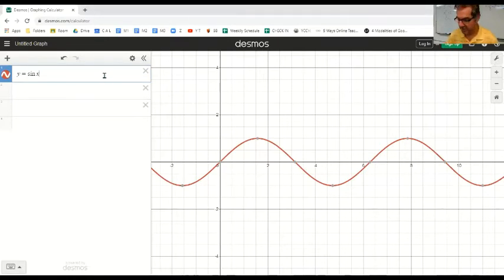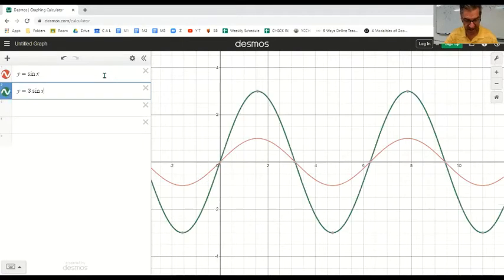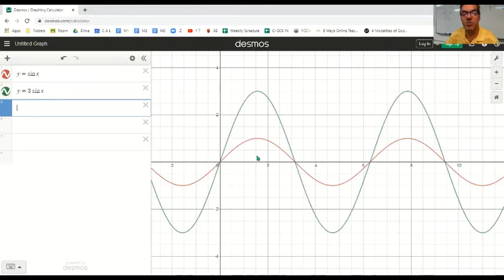So let's play around with the two dilation modifiers. Let's do y equals three sine x. And check that out. That was an amplitude modifier. And you can see from the graph right here, our amplitude is just one. And now it's going up to three. So we increased our amplitude to three.